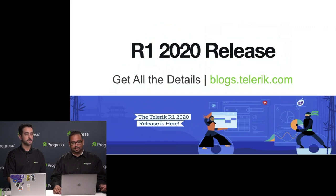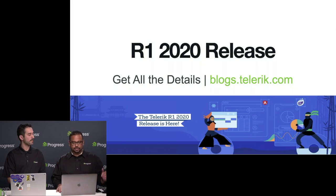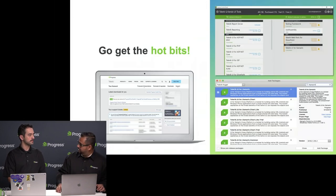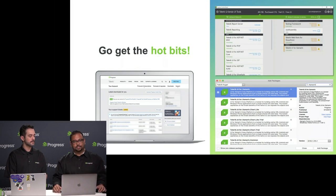The R1 2020 release went out last Wednesday. For checking out everything that's new, go to blogs.telerik.com — every product puts out a blog detailing exactly what was done. The bits are out, so everything we're going to show you today you need the latest bits to see light up in your apps. Get them via NuGet packages, the control panel, or download the DLL directly from the website.